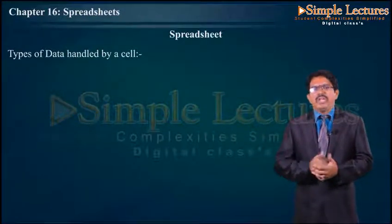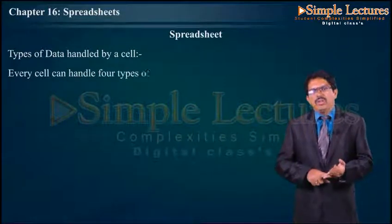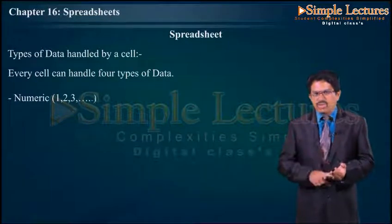Every cell can handle four types of data: numeric, such as 1, 2, 3; text, such as A, B, C and special signs; formulas; and logic error messages.